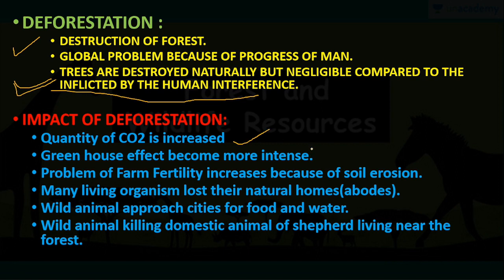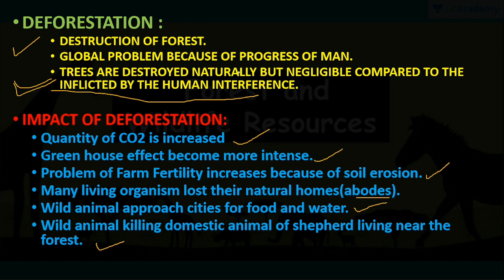The impacts of deforestation are: first, the quantity of carbon dioxide increases because there are fewer trees to consume CO2 from the atmosphere. Second, the greenhouse effect becomes more intense. Third, farm fertility decreases because of soil erosion. Also, many living organisms lose their natural homes — wild animals, birds, and reptiles lose their habitats and sometimes come into city areas looking for food and water, which is why we find leopards or lions roaming near city areas.